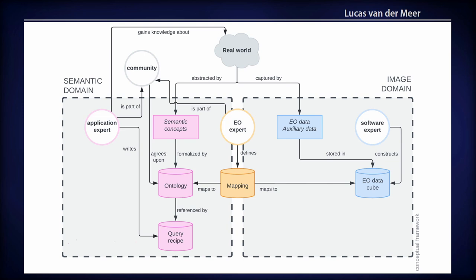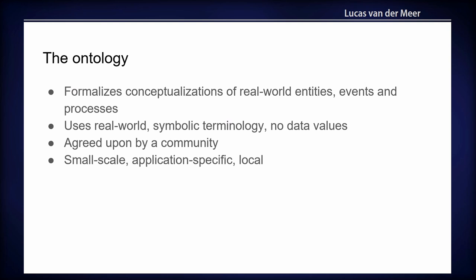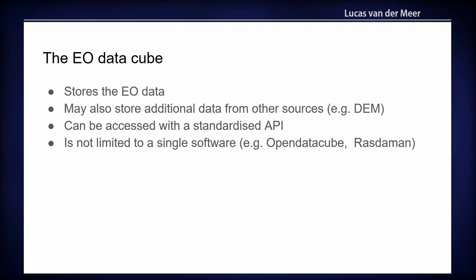Okay, now I will go again through the different components. The ontology formalizes the conceptualizations of real world entities, events, and processes. Uses real world terminology, no data values, agreed upon by the community, and keep it small. It doesn't have to contain everything. The EO DataCube stores the Earth Observation data and they also store other data sources like a DEM or anything that the Earth Observation expert thinks this is useful to define these concepts. And can be accessed with a standardized API which, for example, OpenEO is very suitable for. And it's not limited to a single software in our system. You can use Open DataCube. You can use a file-based system. You can use any different kind of software to actually store your Open DataCube in. But it's not the task of the application experts to set this up.